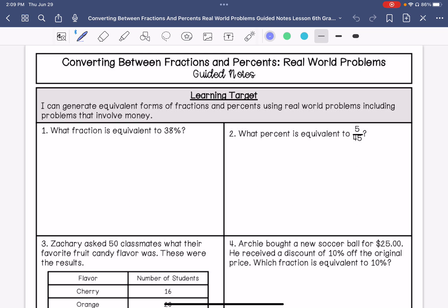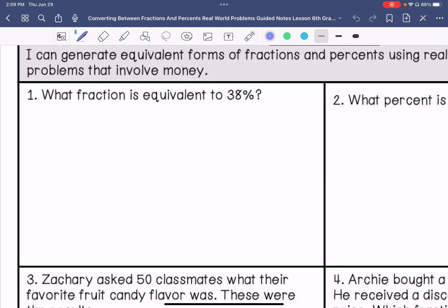Number one says what fraction is equivalent to 38 percent? 38 percent is equivalent to 38 out of 100. And then we are going to divide these by two. We may have to simplify more. So that would be 19/50.